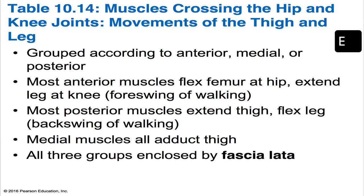We'll start off with muscles that are crossing the hip and knee joints, responsible for movements at the thigh and leg. The muscles of the thigh are difficult to segregate into groups on the basis of actions, so we group them according to position: anterior, medial, or posterior. Most anterior muscles flex the femur at the hip and extend the legs at the knee, producing the forward swing of your leg when walking. The posterior muscles mostly extend the thigh and flex the legs, giving the backswing of your leg when walking.